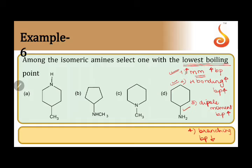Looking at this question, all these compounds appear to have almost exactly the same molecular formula. Each compound has six carbons and one nitrogen — so the molecular formula is the same across all options. Since molecular mass is equal for all, we move to the second and more important criterion: hydrogen bonding.